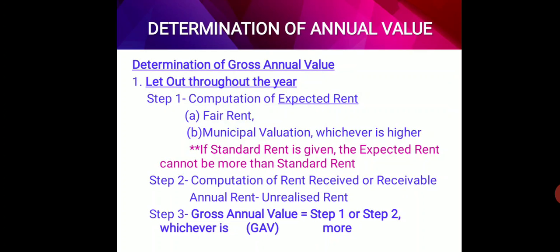Step 2 is computation of rent received or receivable: annual rent minus unrealized rent gives us the rent received. Step 3 is gross annual value equals whichever is more — step 1 or step 2. So out of the expected rent and rent received, whichever is higher will be considered as the gross annual value.